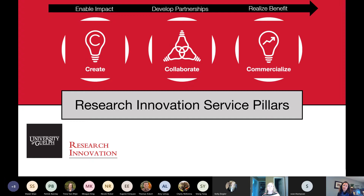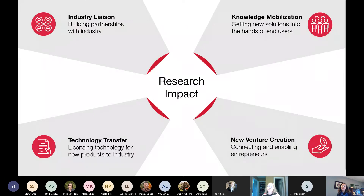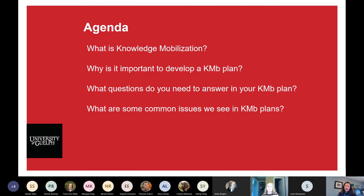My office — the Research Innovation Office, or RIO — is a central unit on campus that's part of the broader Office of Research. We support faculty and students to share research outside of the university for broader impacts. We have four main pillars: industry liaison, which helps faculty connect with industry or government partners; technology transfer, which helps with licenses and patents; new venture creation, which supports commercialization and development of new companies out of research; and knowledge mobilization, which is what we're here to talk about today.